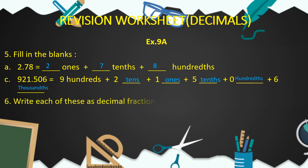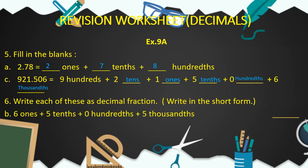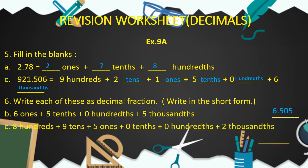Now children, let's come to question number 6 of exercise 9A: write each of these as a decimal fraction, that is in short form. For part B, 6 ones plus 5 tenths plus 0 hundredths plus 5 thousandths is equal to 6.505. For part C, 8 hundreds plus 9 tens plus 5 ones plus 0 tenths plus 0 hundredths plus 2 thousandths is equal to 895.002.